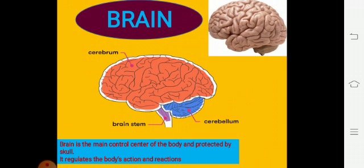First, we are going to study about our brain. Here we have a structure of the brain. What is the brain? The brain is the main control center of the body and is protected by the skull. The brain regulates the body's actions and reactions — whatever we do in our daily life, all activities are controlled by the brain. The brain continuously receives information from our surroundings, rapidly analyzes the data, and then responds.